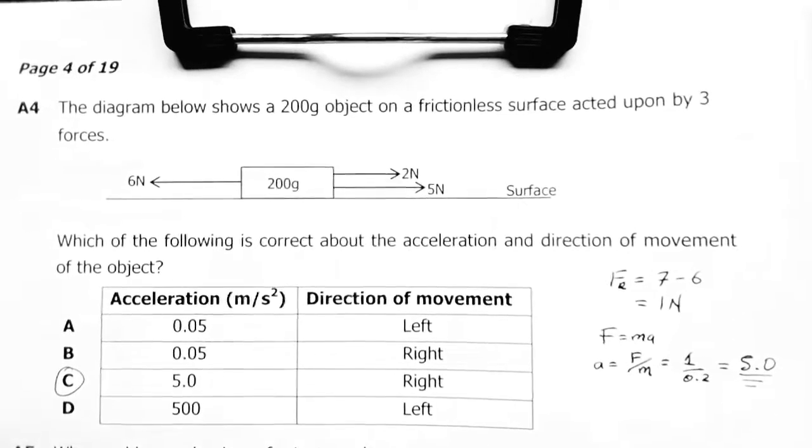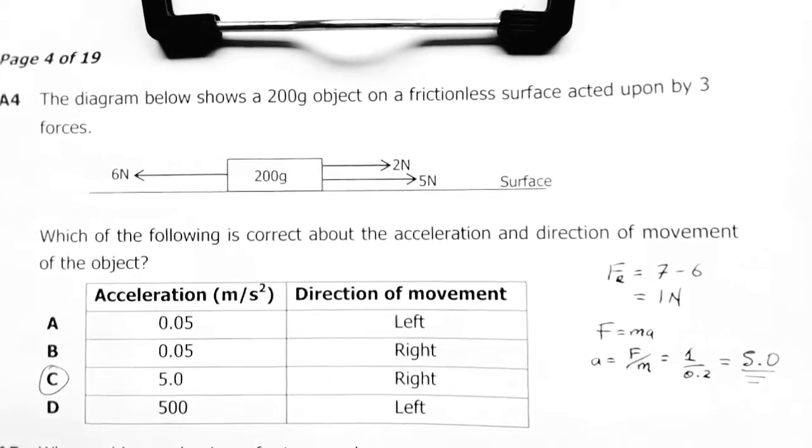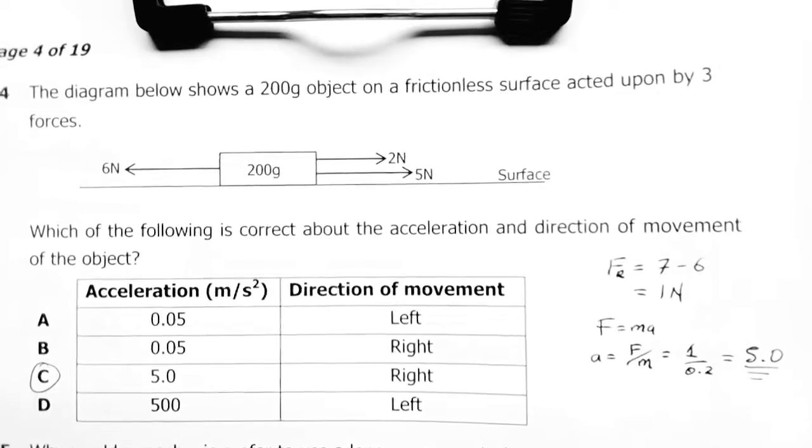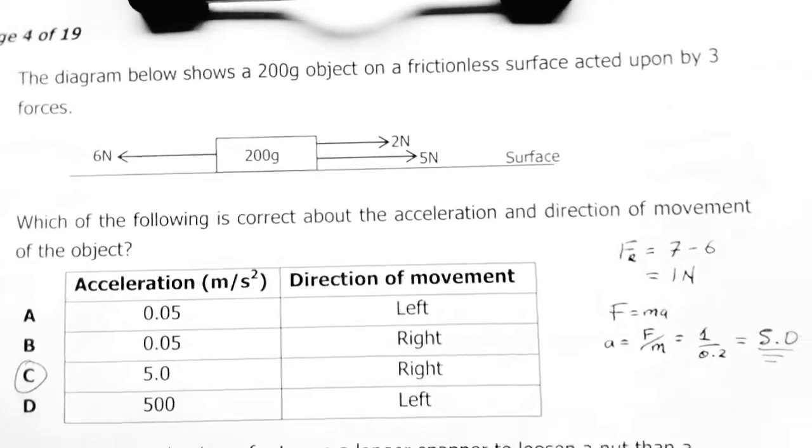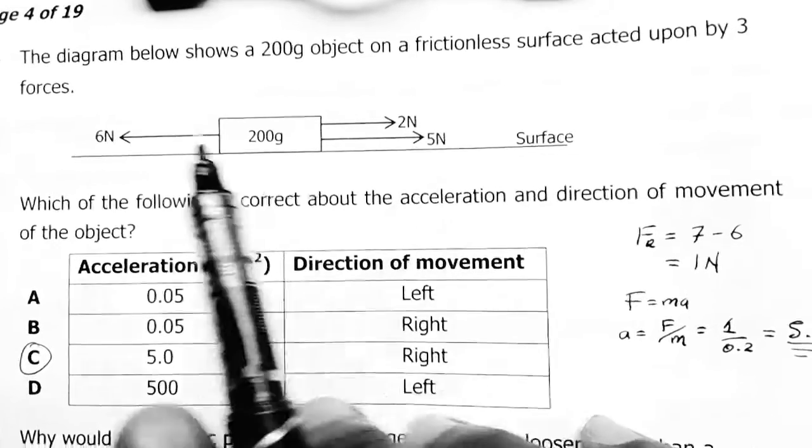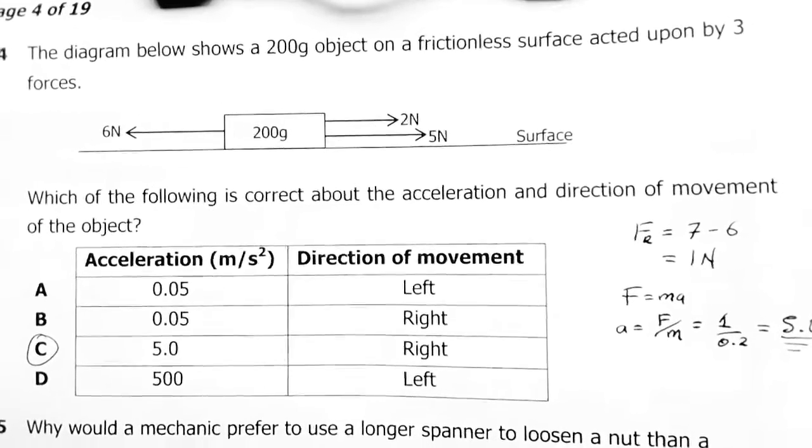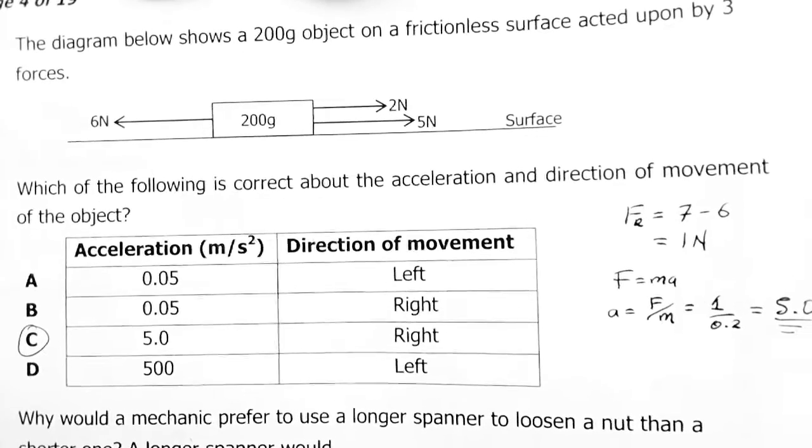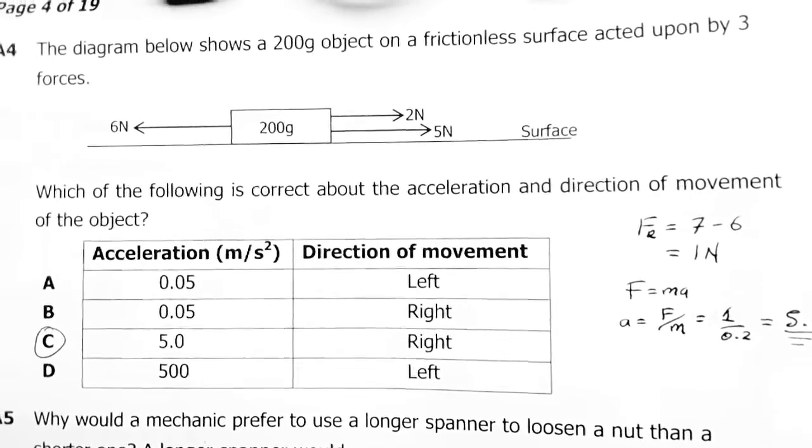Question 4: The diagram below shows a 200 gram object on a frictionless surface acted upon by three forces. That's our 200 gram. These two forces: this is the same as this. This is the 7 newton, this is 6 newtons.